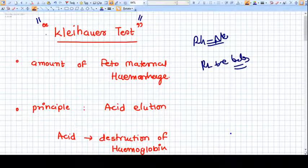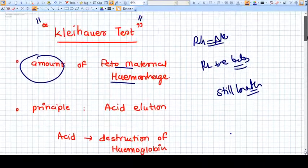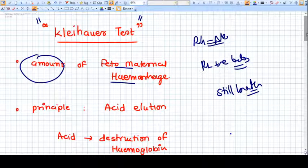What we want to know here is the amount of fetomaternal hemorrhage at any point of time, or most probably at a stillbirth. That means if the baby and mother have an episode of fetomaternal hemorrhage in case of Rh negative pregnancy and Rh positive baby.